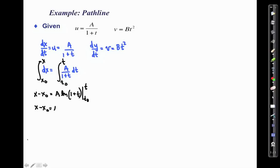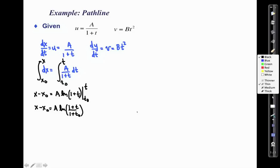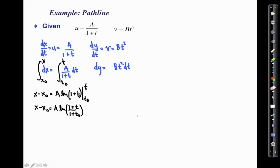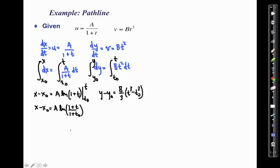Working that out gives x − x0 = a · ln[(1 + t) / (1 + t0)]. Similarly for the y-equation: dy = b·t² dt, integrating from y0 to y and t0 to t, gives y − y0 = (b/3)(t³ − t0³). These two equations describe the x and y positions of a particle released at time t0 from position (x0, y0).